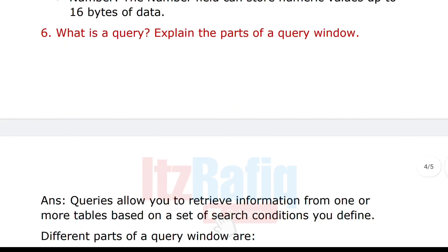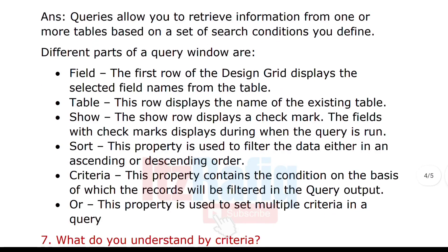What is a query? Explain the parts of a query window. A query allows you to retrieve information from one or more tables based on a set of search conditions you define. The different parts of the query window include: field, table, sort, criteria, and others. Write the definition for one mark and list the parts for one mark, depending on the marks allocated.